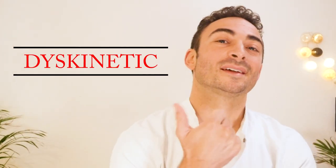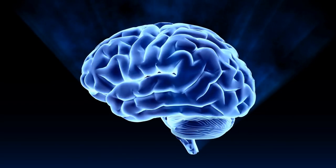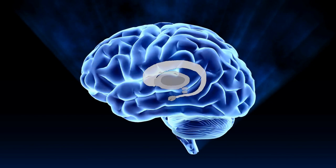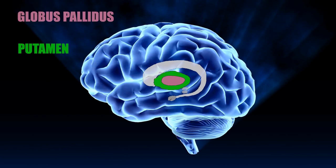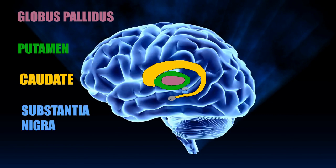The second type of cerebral palsy is called dyskinetic. This type is caused by damage to a structure called the basal ganglia. The basal ganglia refers to a group of subcortical nuclei known as the globus pallidus, the putamen, the caudate, the substantia nigra, and the subthalamic nucleus.